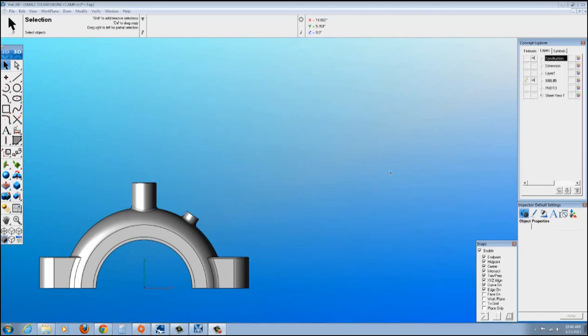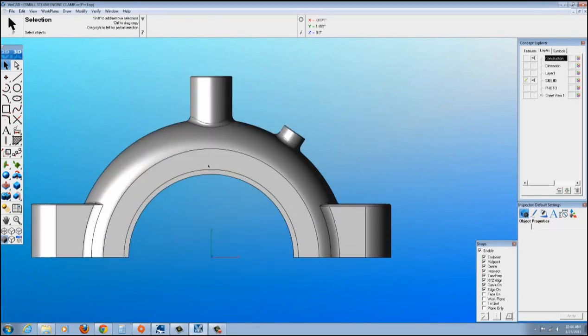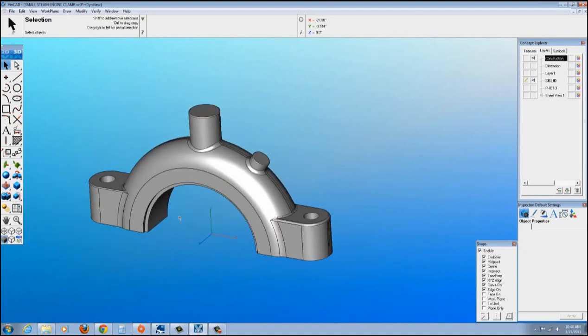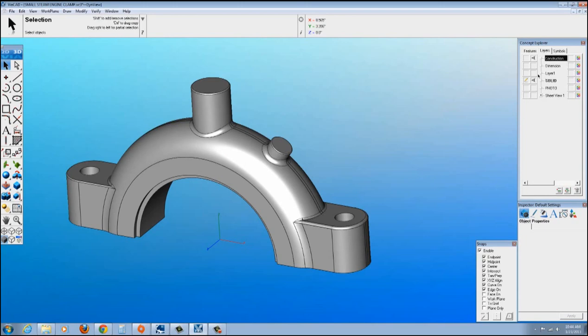Let me just go to the layers here and turn off the sheet and show you the model. As you can see, it's not a super complex model, but nonetheless, it was a great little project for VIA CAD. This is the 2D, 3D version 8.